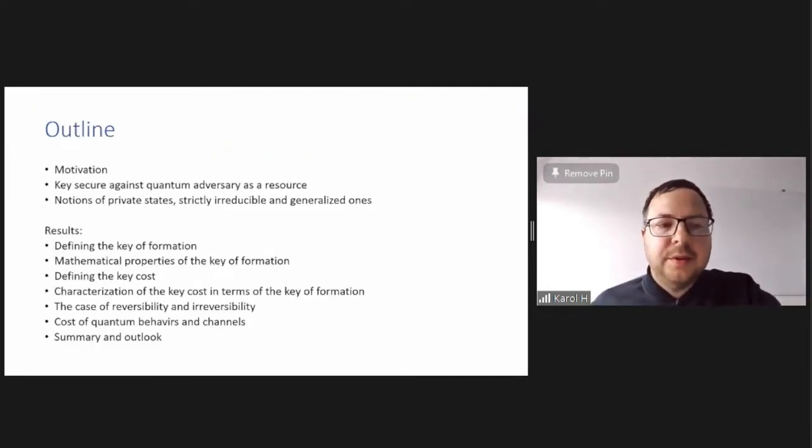This is the outline. I tell you a little bit about motivation. Then treat the secure key as a resource and introduce some important notions like tools, namely private states, strictly reducible private states, and generalized ones. And then I pass through some results. Namely, the first is defining the key of formation, then proving some mathematical properties of it, and further defining the key cost and characterizing it in terms of the key of formation. And then I will talk about the cases when there is reversibility and also irreversibility in the yield cost relation related to private key. And finalized by talking about key costs of quantum behaviors and quantum channels. Conclude with some summary.